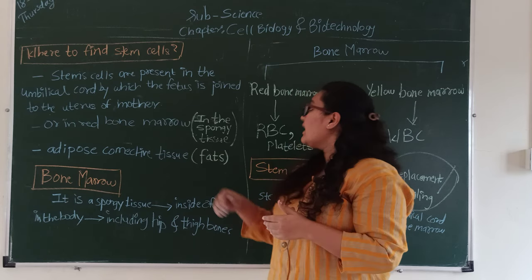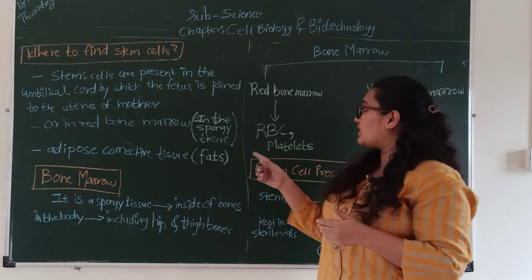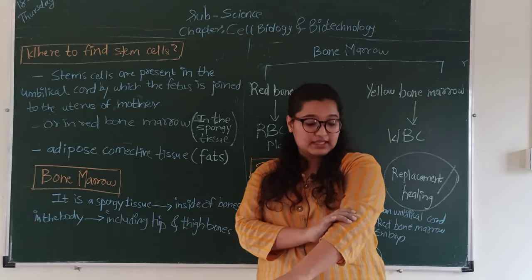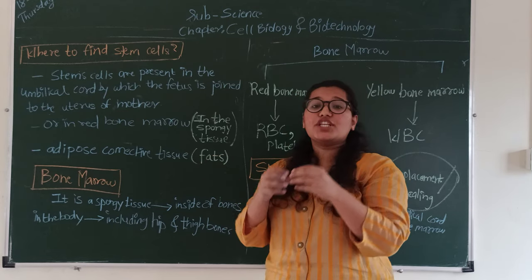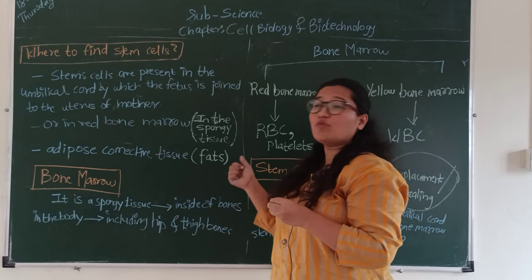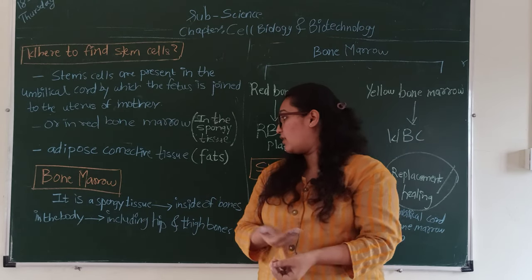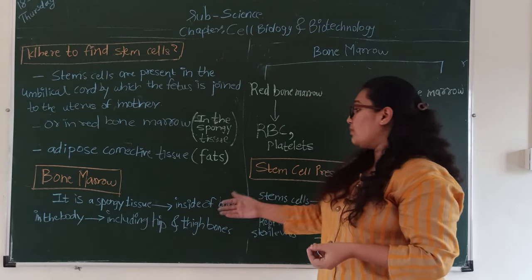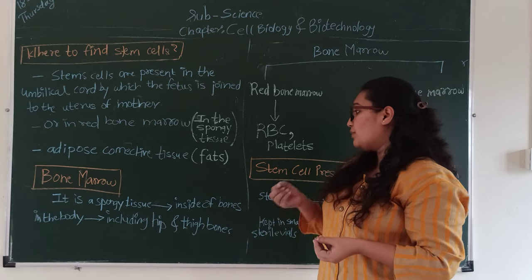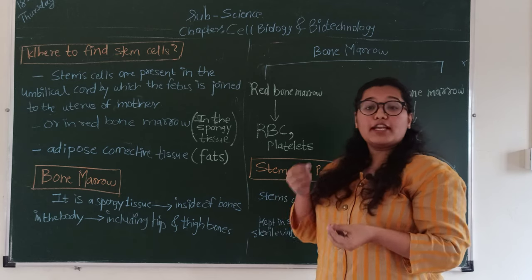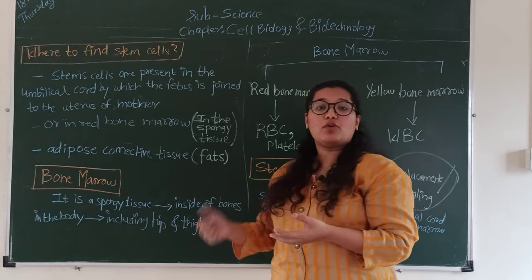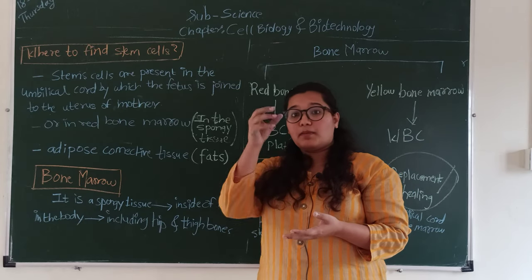We also get stem cells from red bone marrow. Red bone marrow is found in long bones at the joints, in spongy tissue. We can also get stem cells from adipose connective tissue — that is fat in our skin. Bone marrow is basically a spongy tissue inside bones, including the hip and thigh bones, and also in the back of the spine.